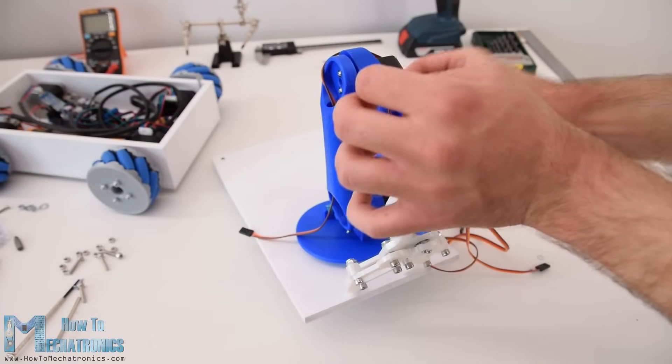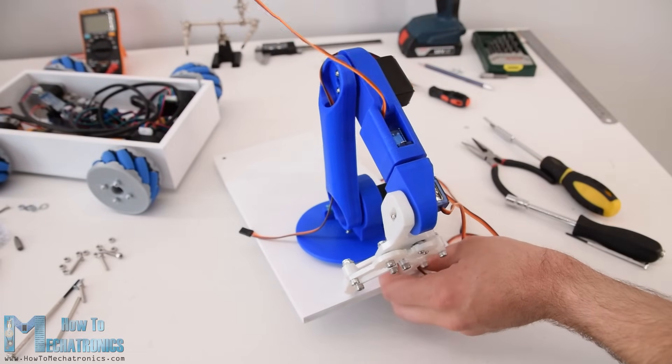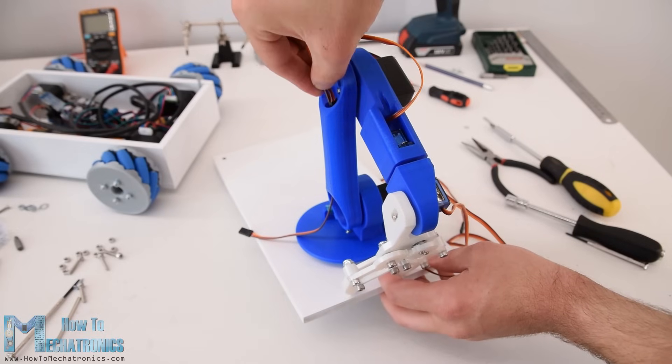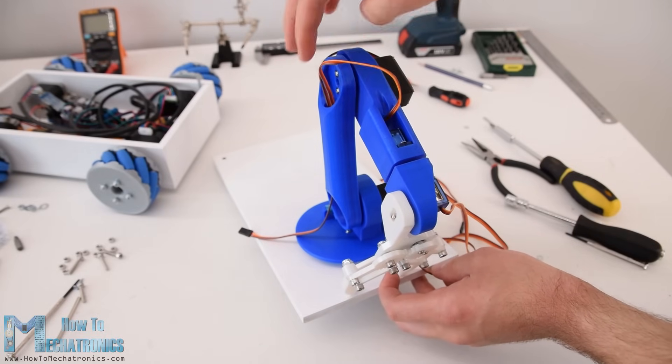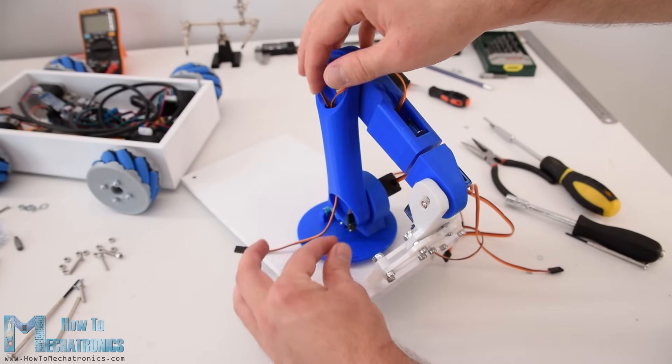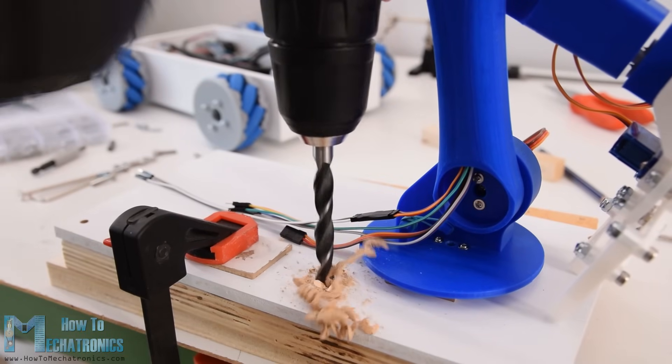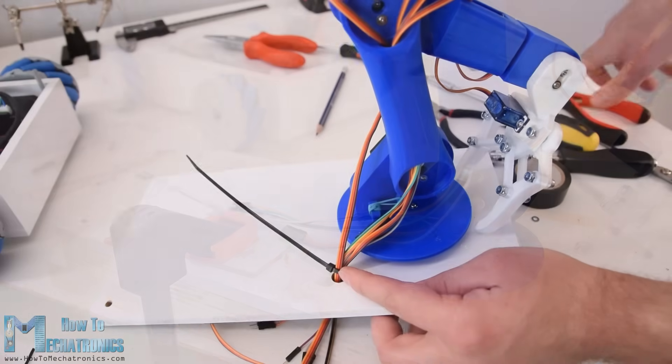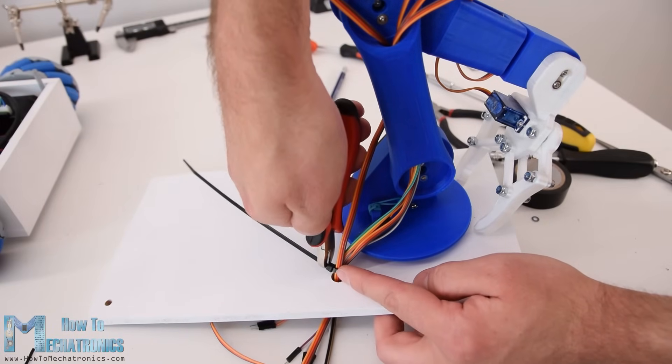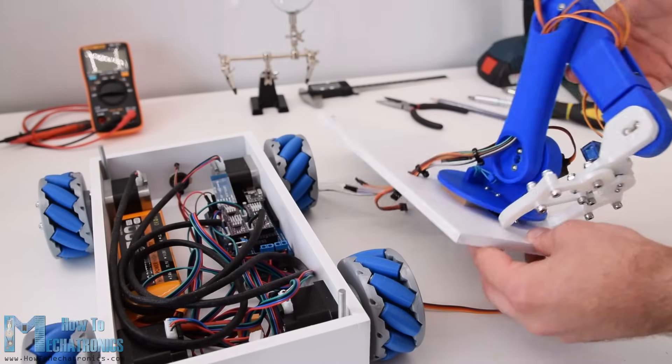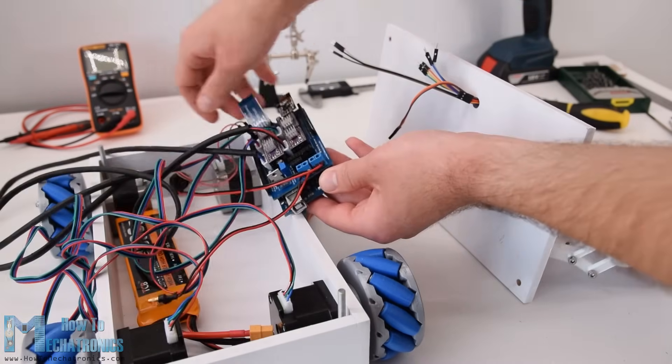Next I did some cable management. I passed the servo wires through the specifically designed holes of the robot arm. Using a 10mm drill I made a hole on the top plate so that the wires can pass through. Using a zip tie I secured all the wires together and now what's left is to connect them to the Arduino board.